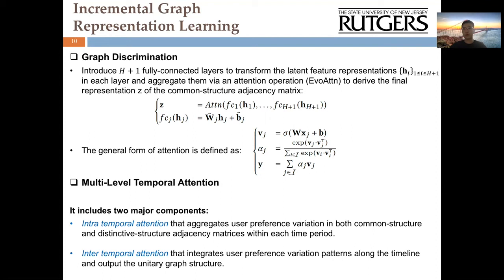Later, we propose multi-level temporal attention, which consists of two hierarchical units where intra-temporal attention is used to aggregate user preference variation in both common structure and distinctive structure adjacency matrices within each time period. The inter-temporal attention integrates user preference variations along the timeline and finally outputs the unitary graph structure.